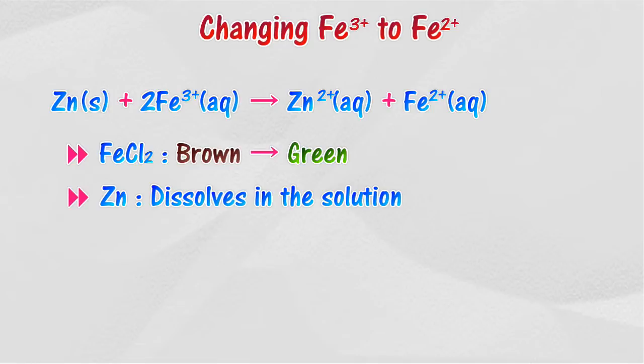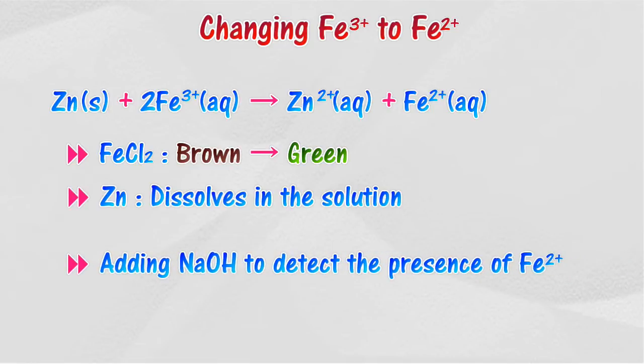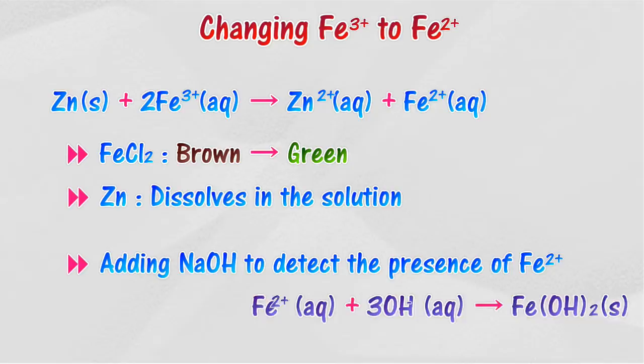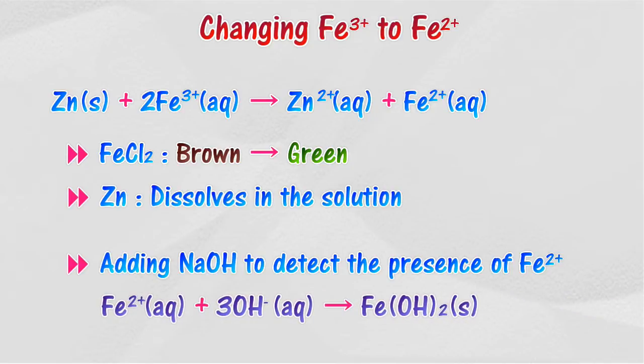The presence of ferrum 2 ion as a product of the redox reaction can be detected by adding sodium hydroxide solution. A green precipitate of ferrum 2 hydroxide is produced.